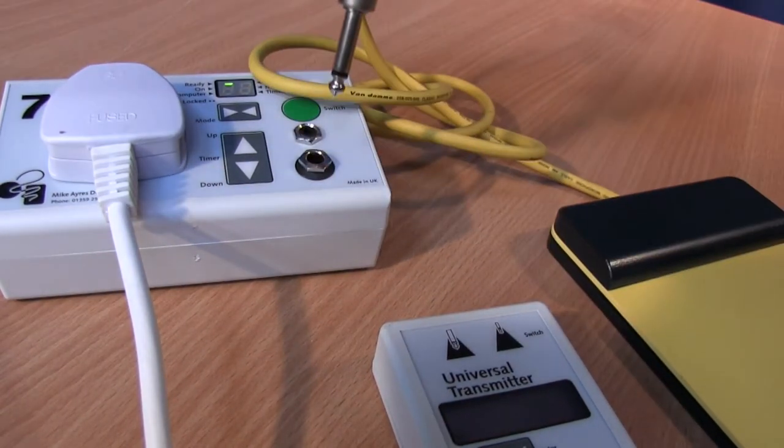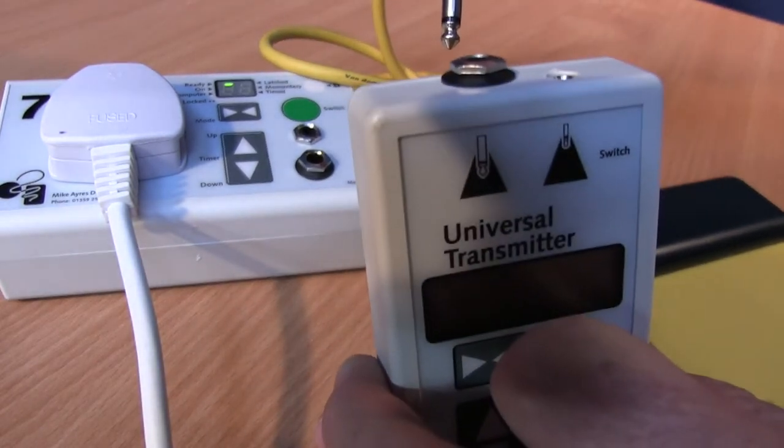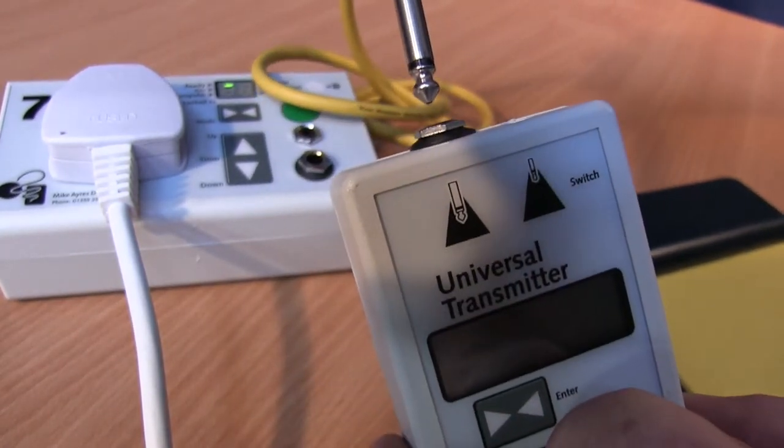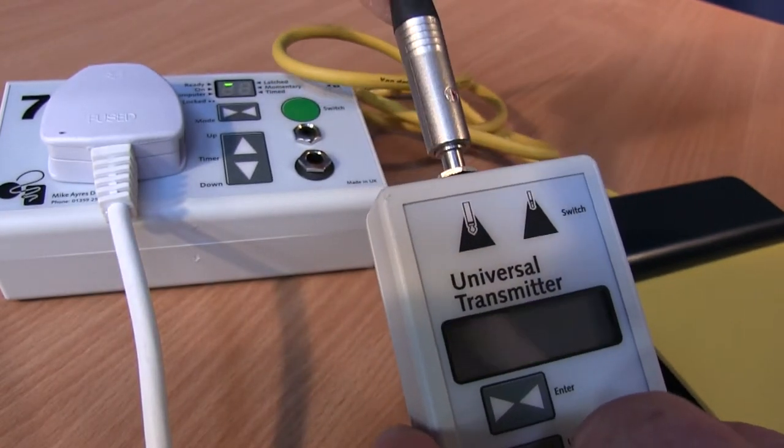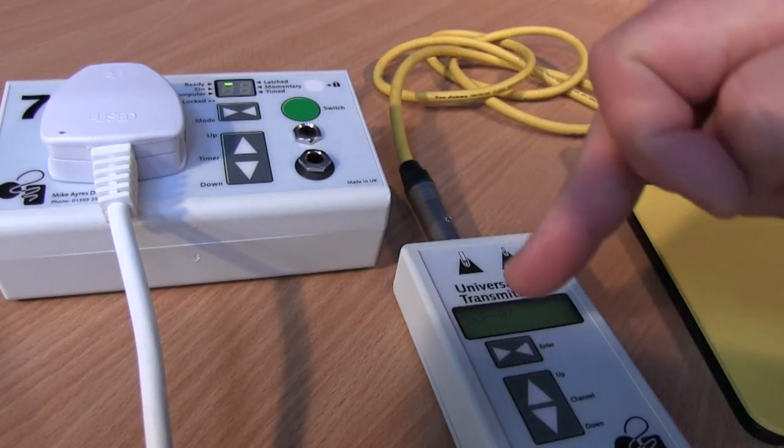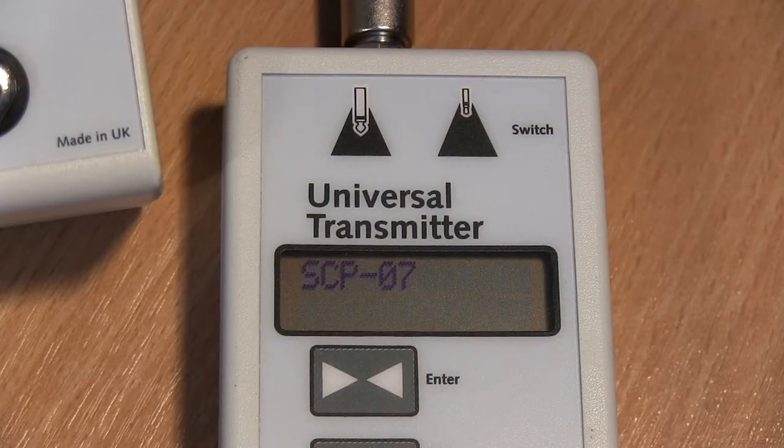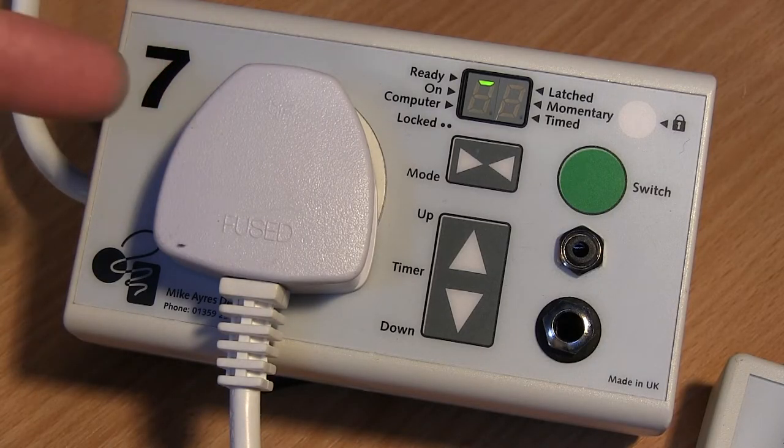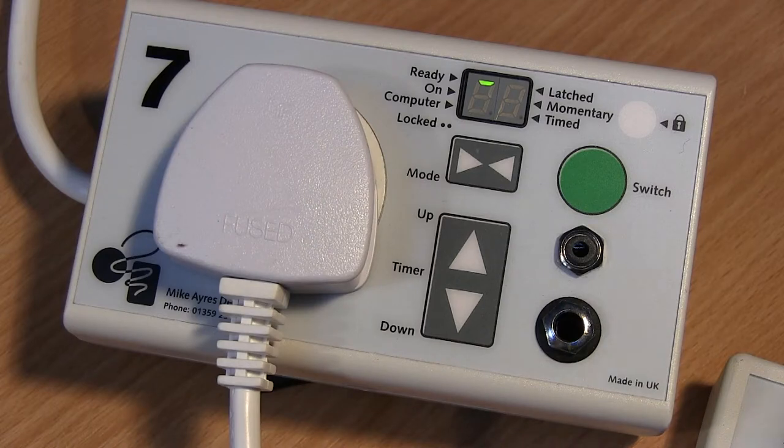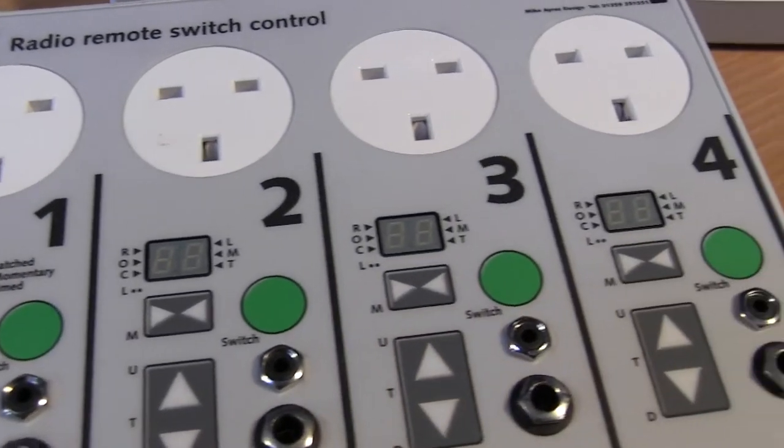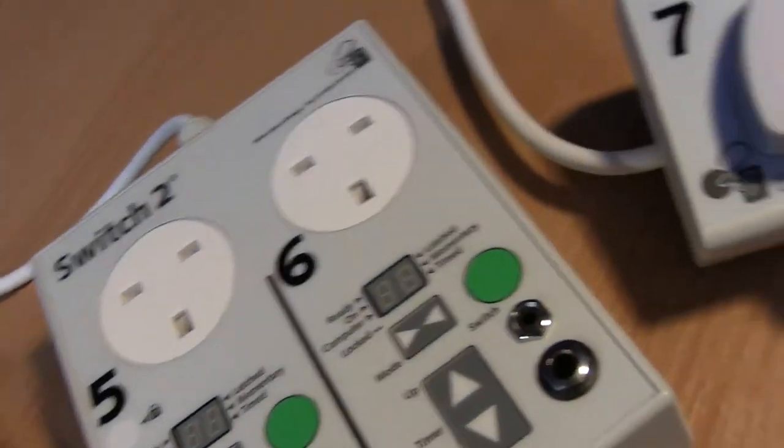To make this thing work radio remote, the first thing you need to do is unplug the switch from the controller and plug it into the universal transmitter. Once again there's two different size sockets here so you can use the small switch. Again this one is one of the Mike Ayres switches so let's pop it gently into there. So now my switch is connected directly to the universal transmitter right there. Now if you look closely here you'll see it says SCP 07. This means that this transmitter is going to talk to controller number seven.